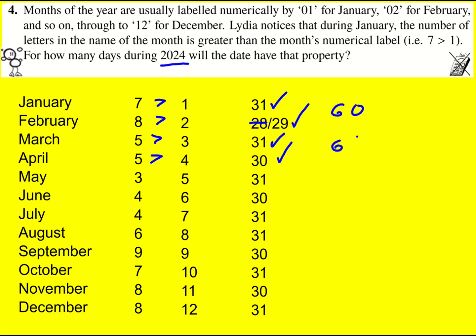I get 151 from the second two. So the answer is going to be 121. Brilliant. You might be able to do this a bit quicker — I actually wrote down all the months when I did it; I just didn't want to be caught out.